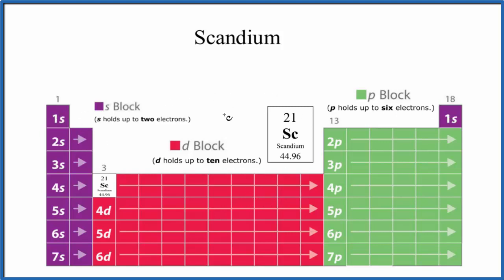1s2 - s only holds up to 2, so we have 1s2. Then we go to 2s1, 2s2. We go over to 2p, and p can hold up to 6, so we have 2p6. So far we've used 10 electrons; we have 21.